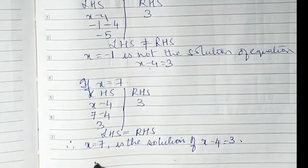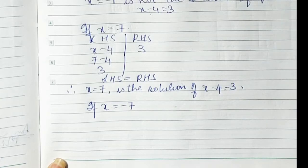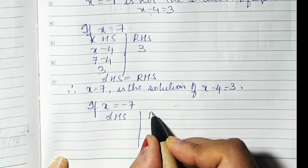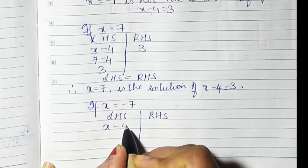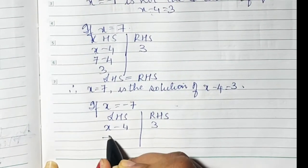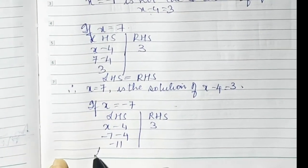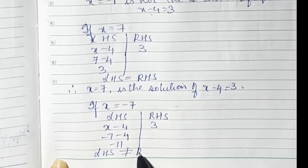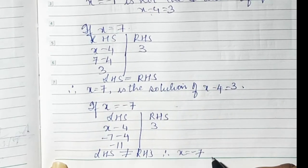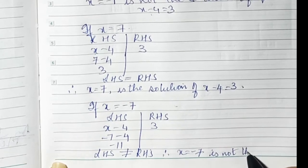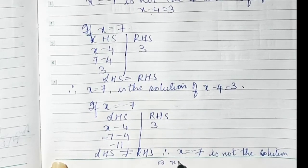Once LHS and RHS become equal, that value is the solution. Now let's try x = -7. LHS is x minus 4 and RHS is 3. Substituting: minus 7 minus 4 gives minus 11. Since -11 ≠ 3, LHS is not equal to RHS. Therefore, x = -7 is not the solution of x - 4 = 3.